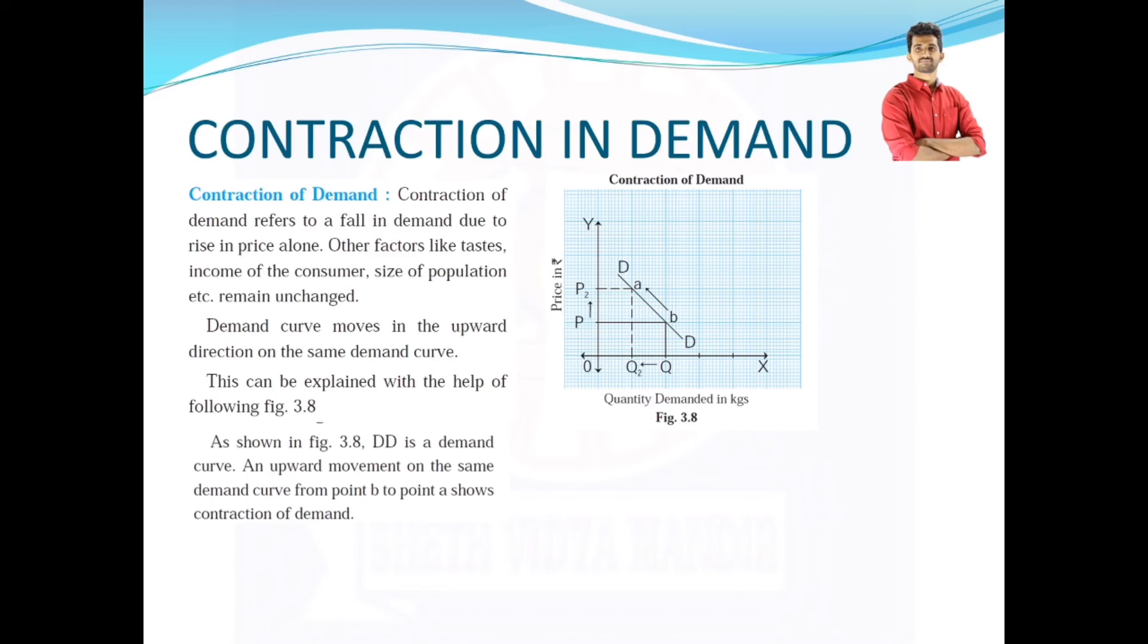As the law of Alfred Marshall says, higher the price, smaller the quantity. Similarly, even here, when the price rises from P to P2, the quantity demanded reduces from Q to Q2. You can see in figure 3.8.